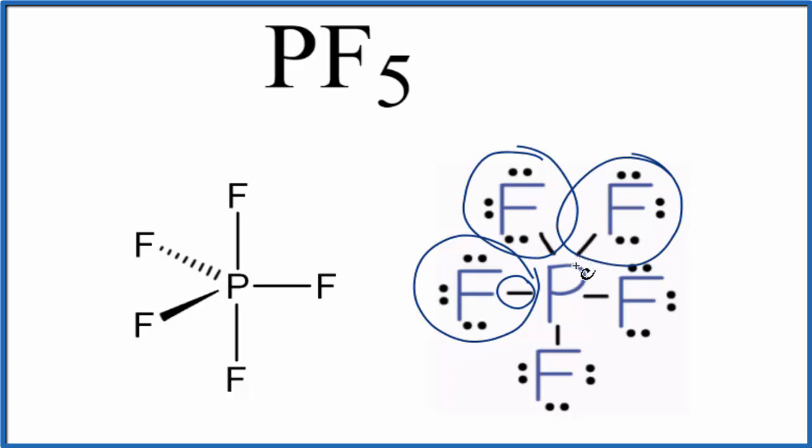The phosphorus, that's a bit of an exception. It can have an expanded octet. Here it has ten valence electrons, but they're all shared with the fluorine atoms.